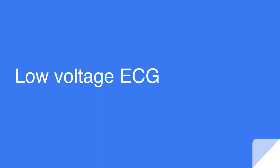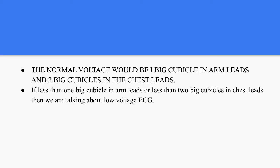So what do we mean by low-voltage ECG? We mean that the amplitude of the R-wave in the arm leads is less than 5 millimeters — that's one big cubicle. And on the chest leads, less than two big cubicles, that's 10 millimeters.